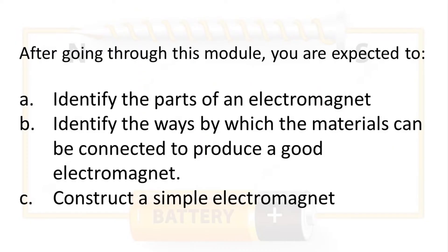After going through this module, you are expected to: A. Identify the parts of an electromagnet. B. Identify the ways by which the materials can be connected to produce a good electromagnet. C. Construct a simple electromagnet.